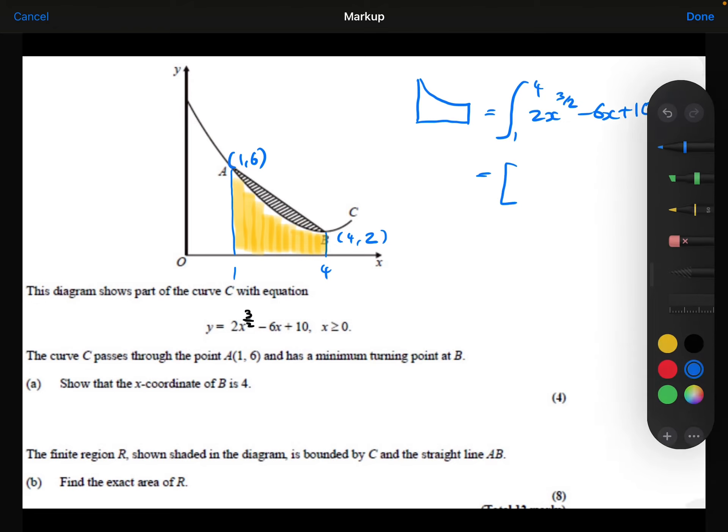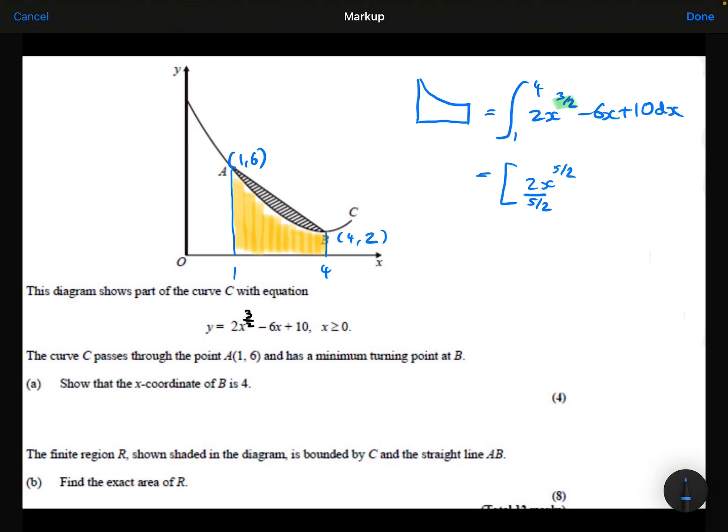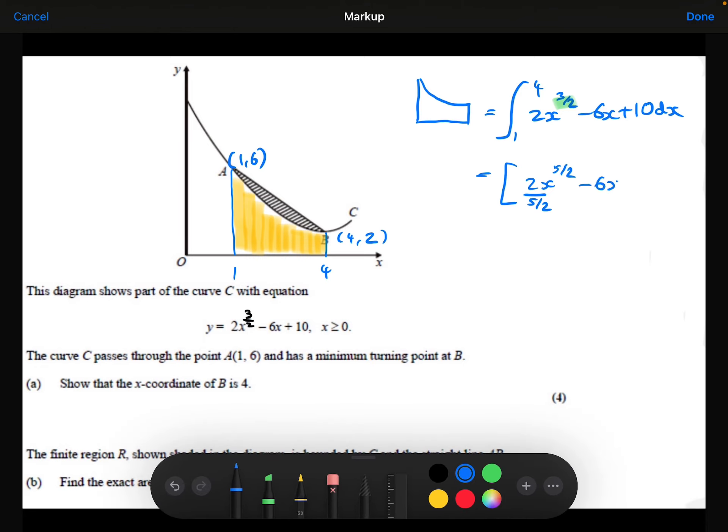So we're going to add 1 to the power, so add 1 to the 3 over 2, we're going to get 5 over 2, and then divide by that new power. We'll simplify that in a minute. We're then going to add 1 to the x power here, and then divide by the 2. And the 10 will integrate to be 10x. Simplifying this, the 2 divided by 5 over 2 is going to be 4 over 5, or four-fifths. The 6 divided by 2 is 3.